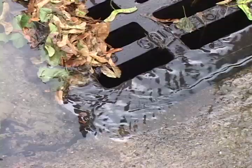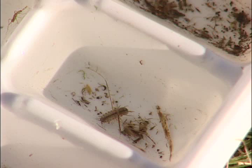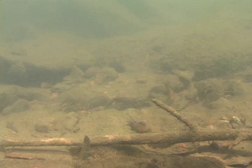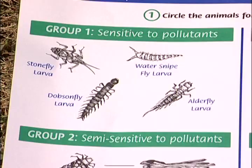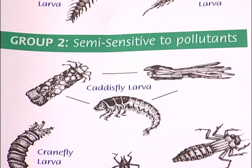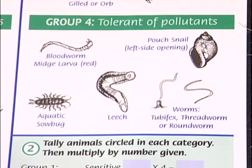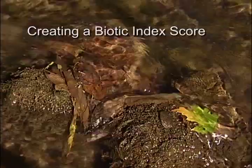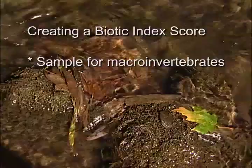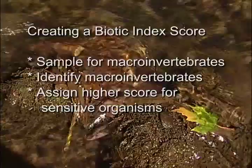You can learn more about this in the dissolved oxygen portion of the DVD. In relation to macroinvertebrates, it's important to understand that different types of macroinvertebrates have varied needs for oxygen. There are organisms that are sensitive, semi-sensitive, semi-tolerant, and tolerant to pollutants that affect oxygen levels in the water. A water quality rating or biotic index score can be determined by sampling for macroinvertebrates, identifying them, and then assigning higher scores to sensitive organisms and lower scores to tolerant organisms.